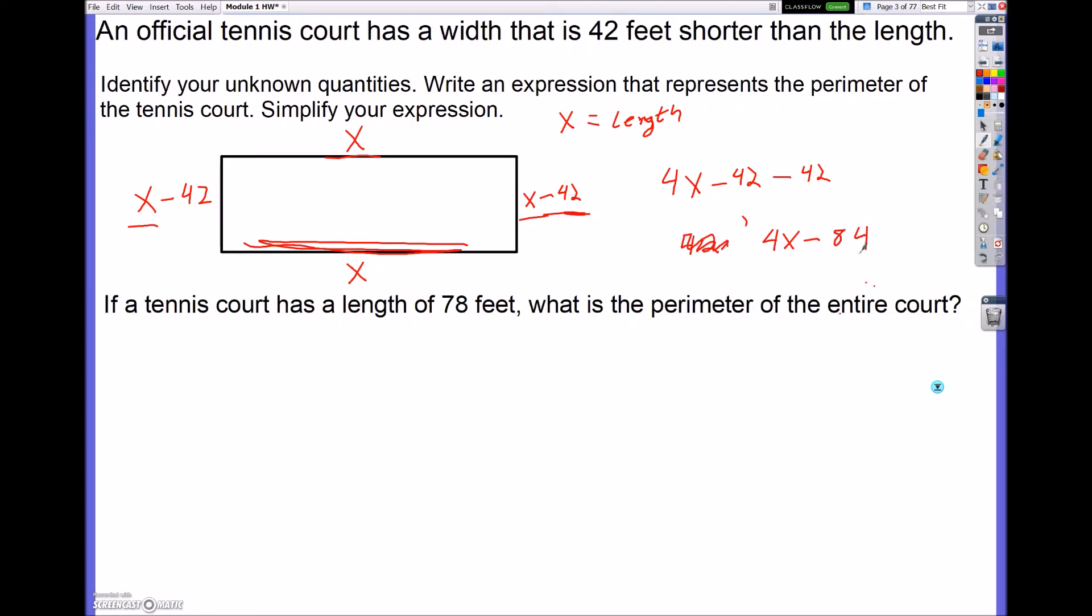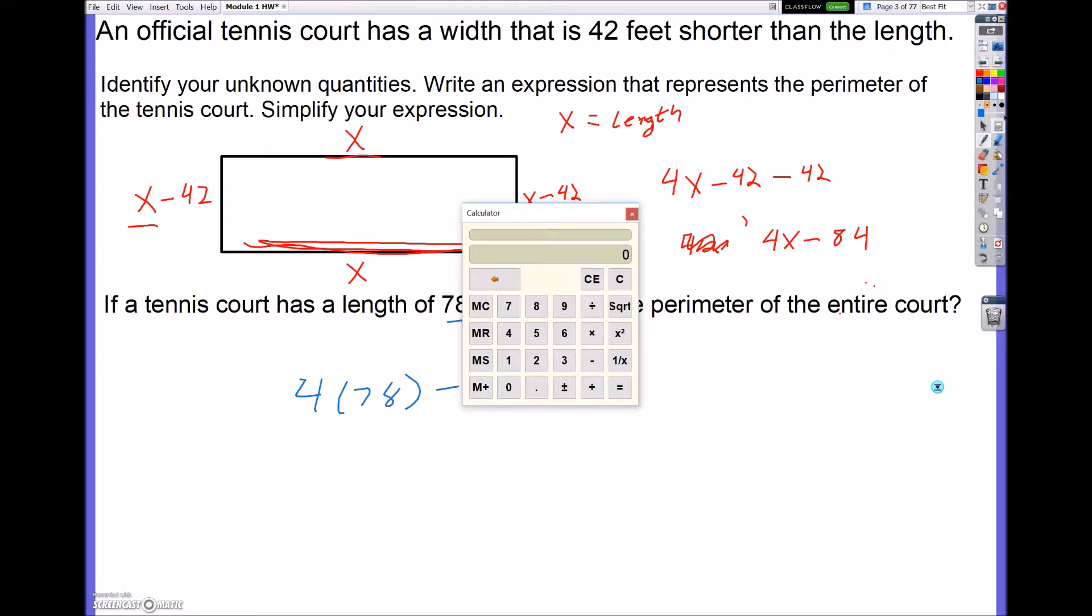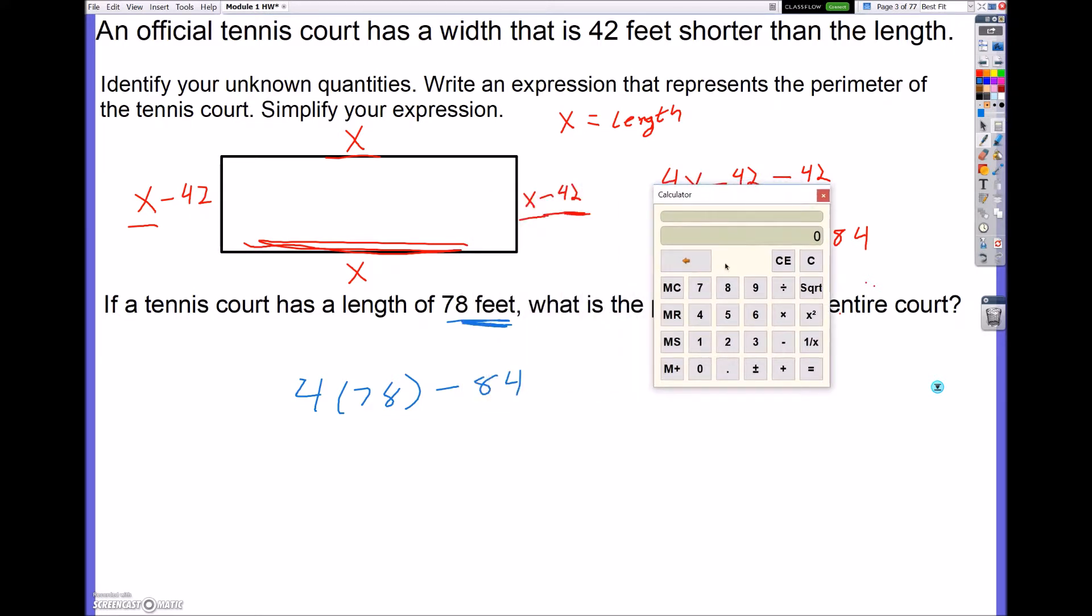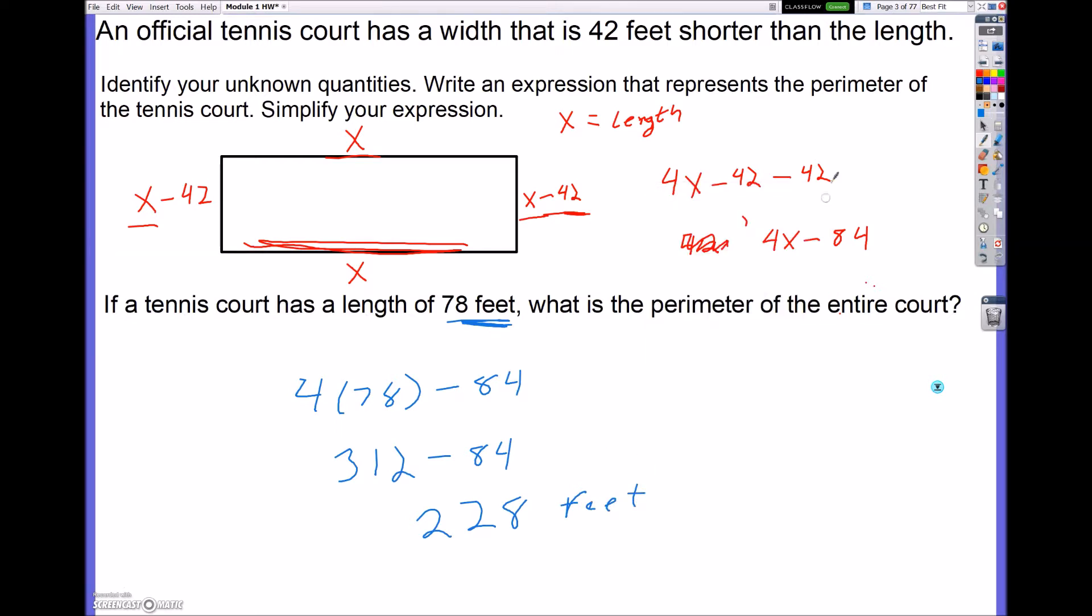Now because this is an x and this is an 84, I cannot combine them. But now let's say it gives us more information. It says, well, let's say the court has a length of 78 feet, what would that look like? So it would be 4 times 78 minus 84. And we're going to go ahead and simplify this. I'm going to bring up my calculator and just do 4 times 78, which is 312 minus 84, and that will give us a value of 228 feet. And that is what the length of the court is equal to.